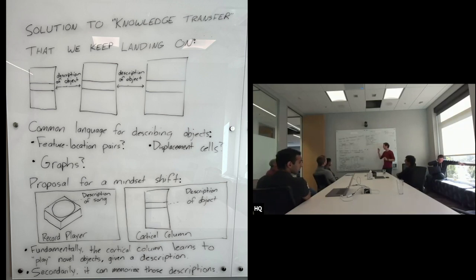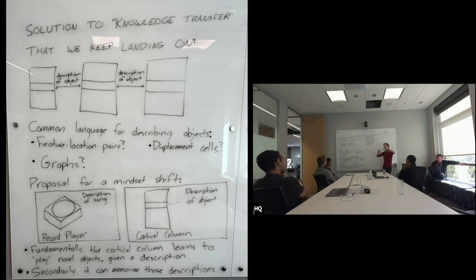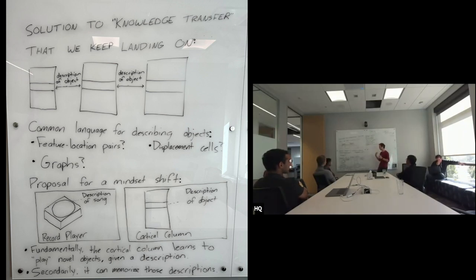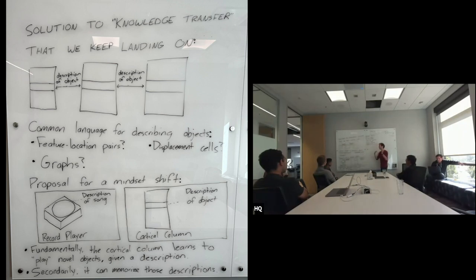Shortly after, I did something really similar with displacement cells — using the transform between two unique object spaces and storing a bunch of those. One of the exciting parts of that was that now you could have that be the thing that you're passing sideways, as a way of communicating descriptions of objects horizontally. One issue was that this would mean all these columns would have to share the same grid cell space in order to communicate that, so that wasn't universally liked here.